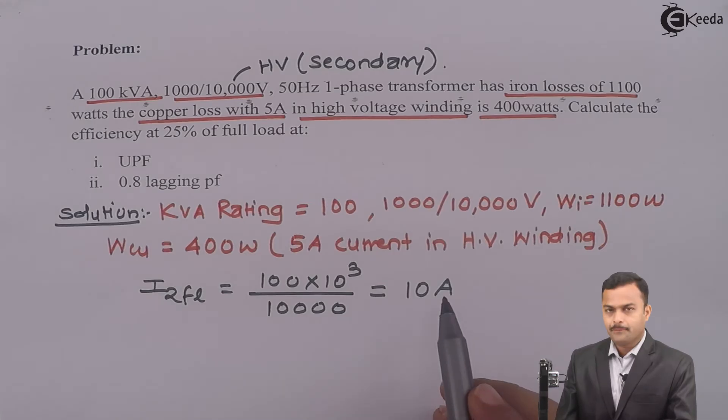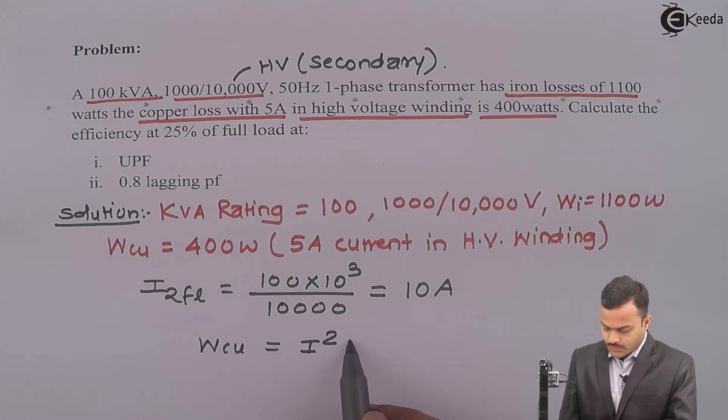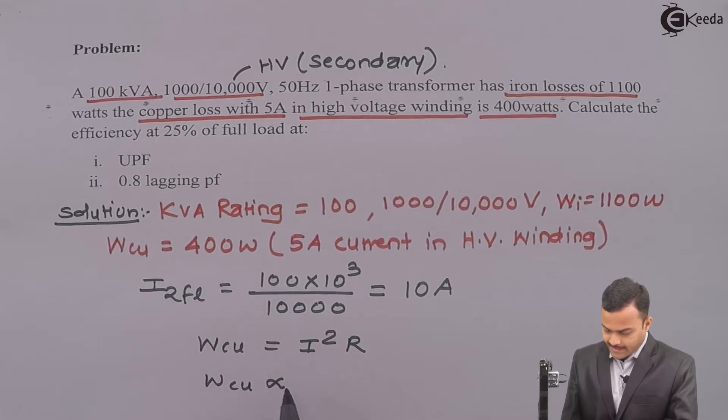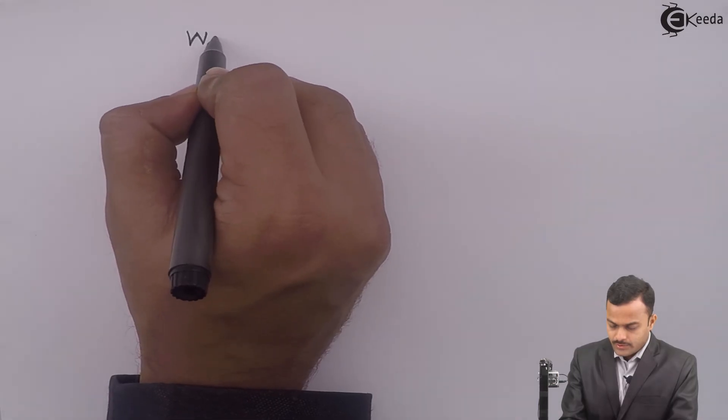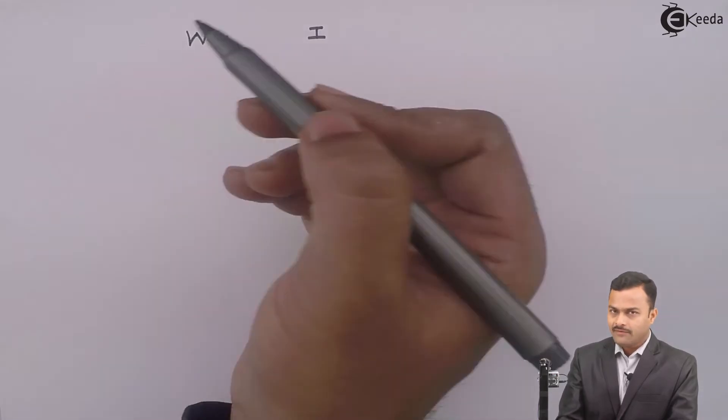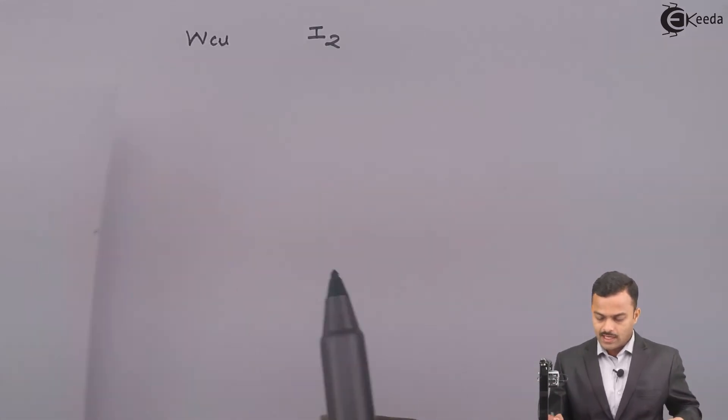Now how am I going to use this 10 ampere to get a full load copper loss? We have seen that copper loss is actually given by I²R, whether it is a primary or secondary. So WCU is directly proportional to I². So now I have two things given. I know WCU and I know corresponding current I, which I will mention as I2 because they are saying high voltage winding current is 5 ampere.